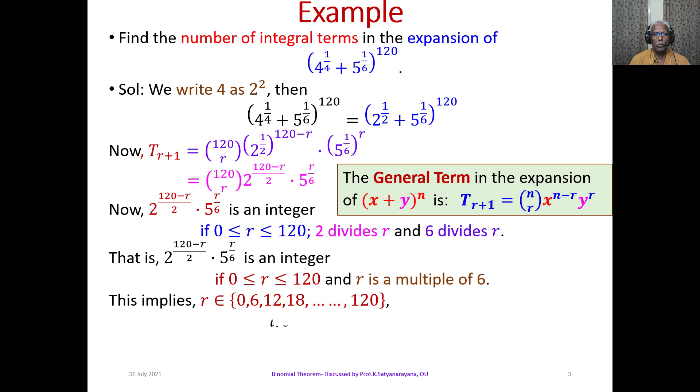Therefore, the number of integral terms in the expansion is equal to 21. That is, the terms with integral coefficients, the number is 21. That is the end of the problem. The answer is 21.